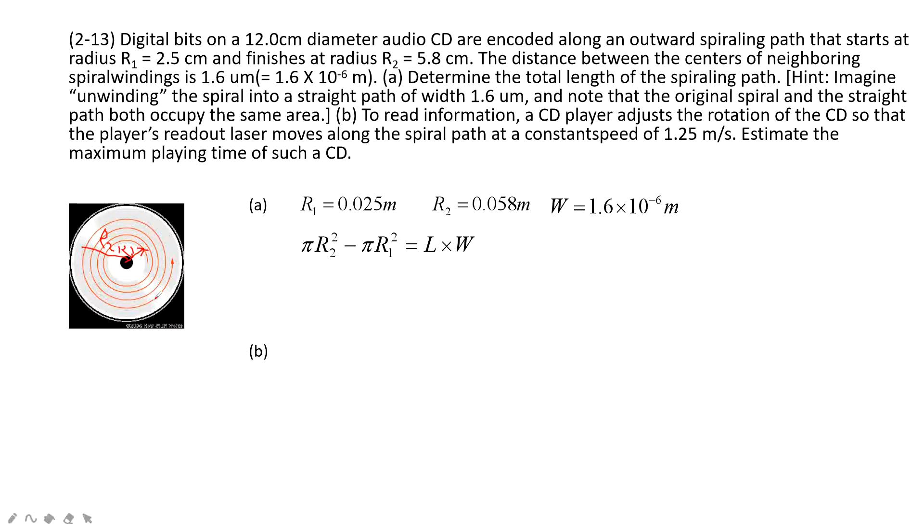And this is equal to the length of these circles, times the widths of these circles. So this one is W, is 1.6 micrometers times the length, how much length of these circles. Therefore, we can find the length for the circles is 5400 meters.